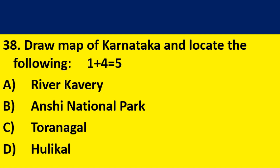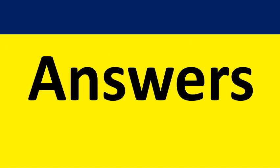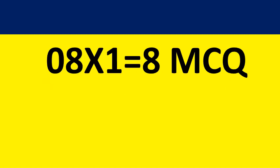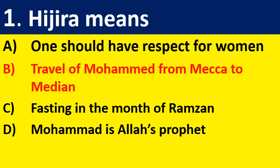So far I have presented the question paper. Now I will present the answers. Answers for MCQ questions. Question 1: Hijira means — the correct answer is B: travel of Muhammad from Mecca to Medina.